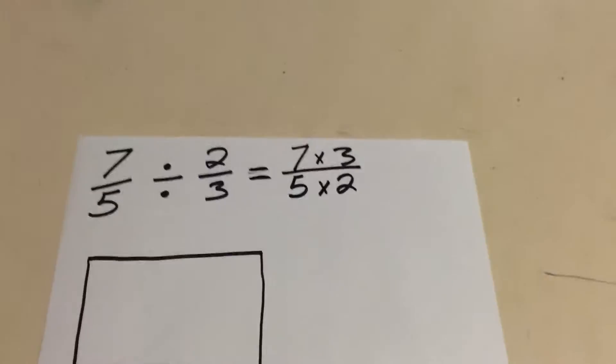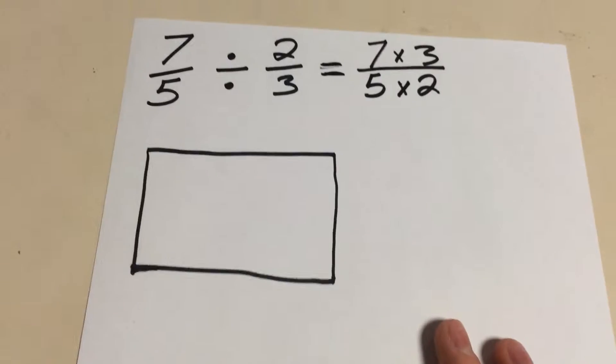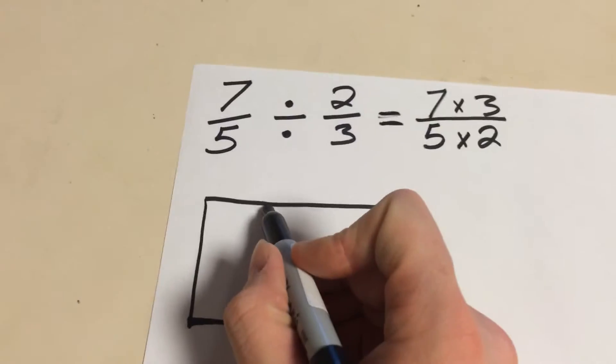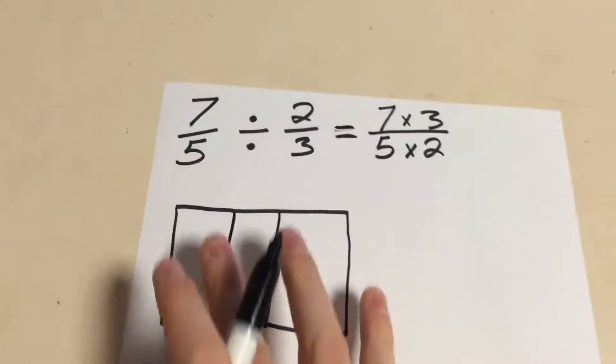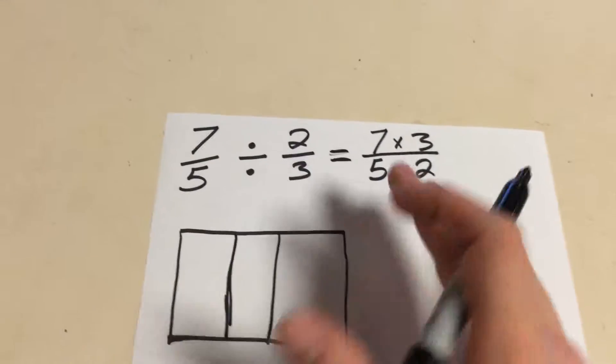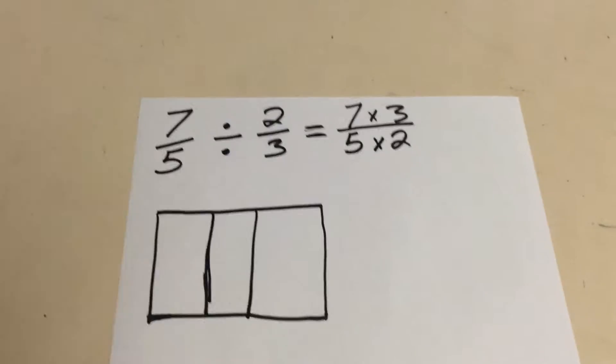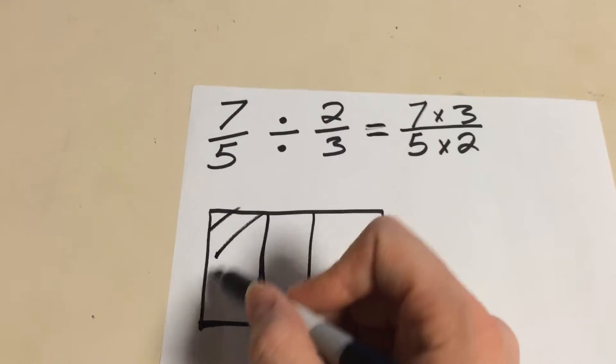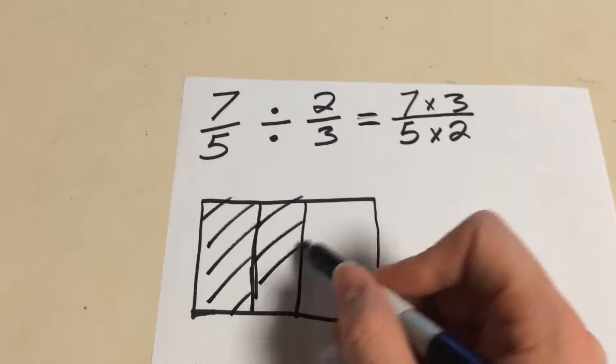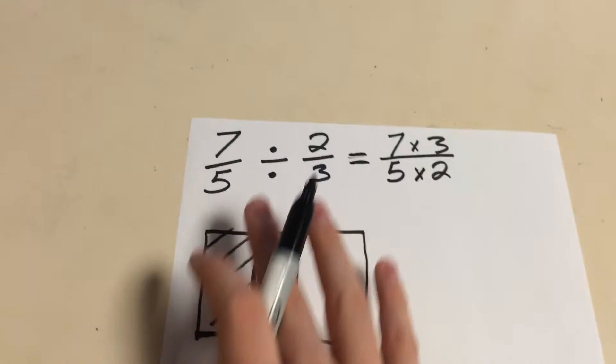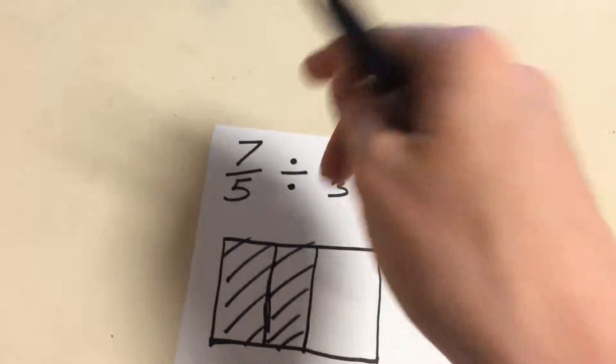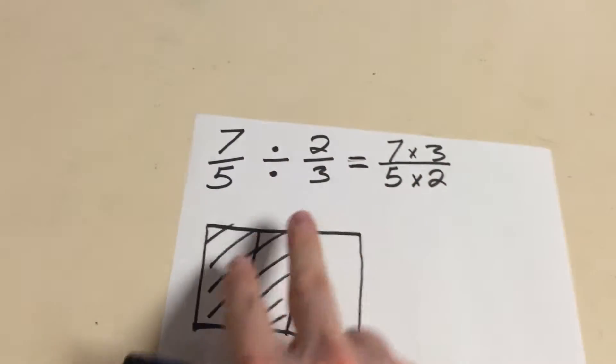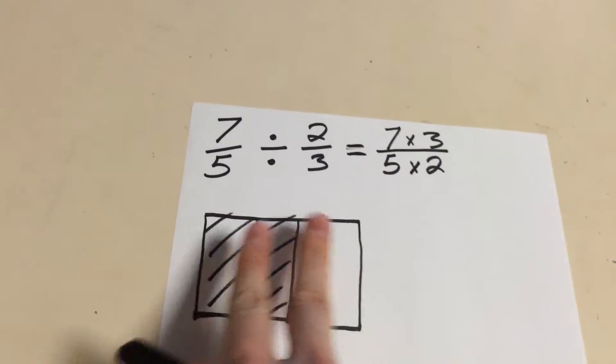To start off, we have our whole here. We're going to divide that into 2 thirds because this is a measurement division problem. We have 2 thirds here, 2 thirds of one group. What is happening here is we have 7 fifths for every 2 thirds of one group.